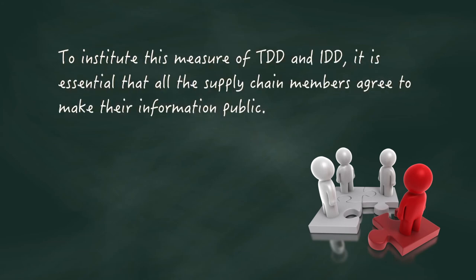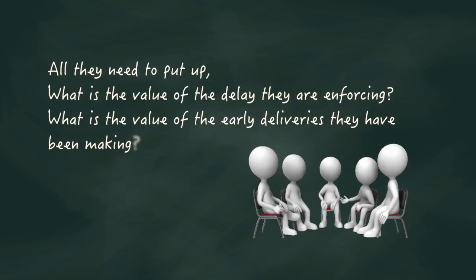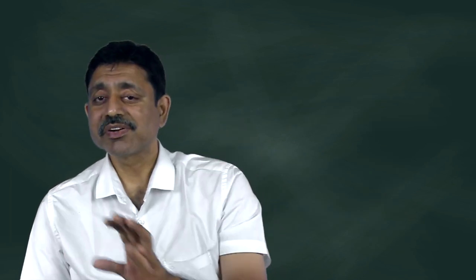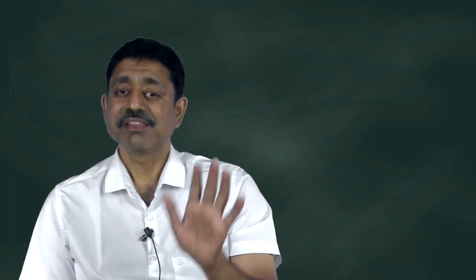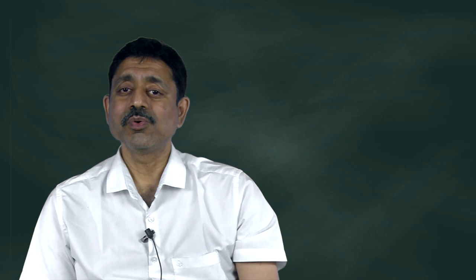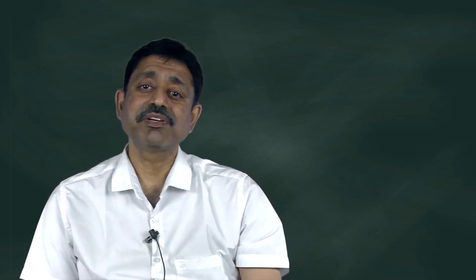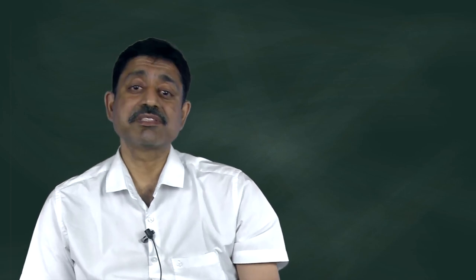To institute this measure of TDD and IDD, it is essential that all the supply chain members agree to make their information public. There is a certain level of transparency which is required, which requires a change in thinking in the management of the various players on the supply chain. All they need to put up is what is the value of the delay they are enforcing and what is the value of the early deliveries they have been making. If each player in the supply chain maintains this record and makes it publicly available to all the other players, then it's extremely simple for the entire supply chain to find out who is the bottleneck, who needs some help, whom should you not overload, because bottlenecks overloaded means the entire supply chain gets jammed. And this is a lovely method of even comparing two supply chains, especially if a person is a member of two or more supply chains.